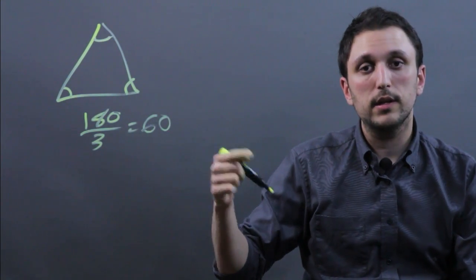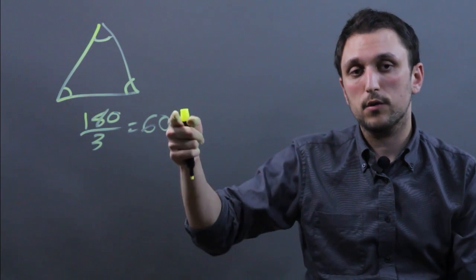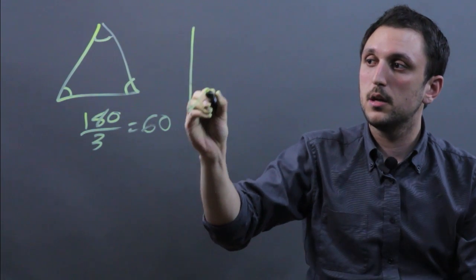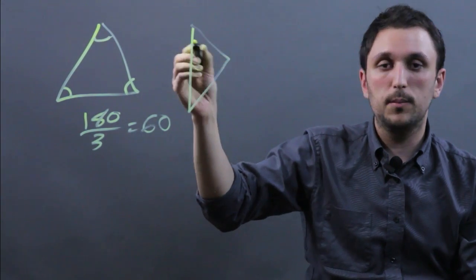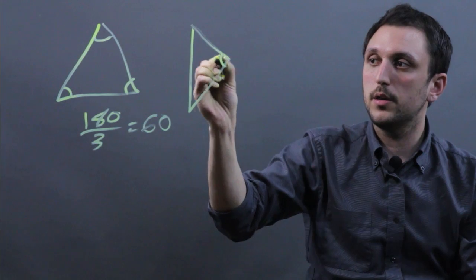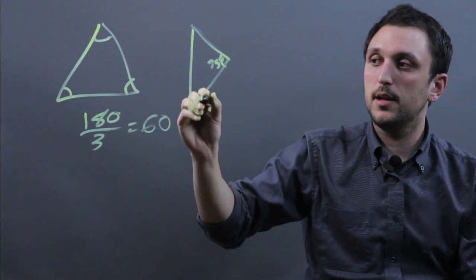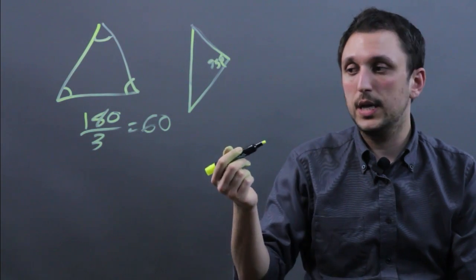Now with an isosceles, two sides and the two corresponding angles have to be equal. So let's say we have a triangle like this, a little bit obtuse, and we call this 95 degrees. Well that means that this plus this plus this have to equal 180.